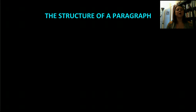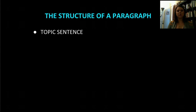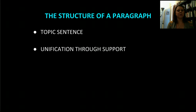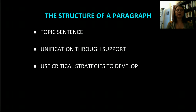So, the structure of a paragraph. Just like an essay has a formal structure, so does a paragraph — it has certain things it must do in order to be convincing. There are three primary things found in any body paragraph. The first and most important is the topic sentence, which is the developed argument of the paragraph. Then, unification of that topic through the support you provide. And finally, you use critical strategies to develop that support. If you are doing all three of those things, you will have a strong paragraph that convinces the audience.